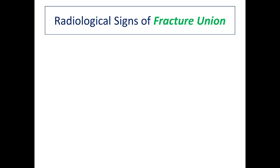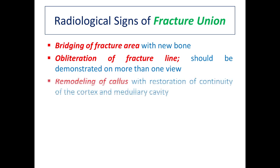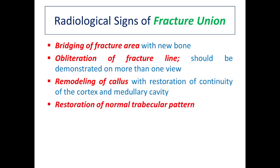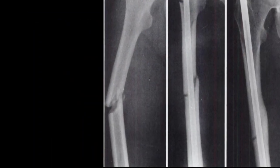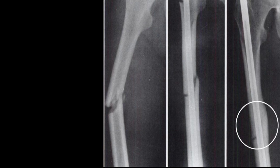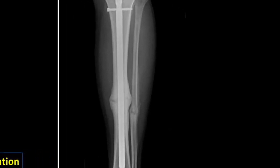The radiological signs of fracture union include bridging of the fractured area with calcification and obliteration of the fracture line. At 8 to 12 weeks, you can observe remodeling of the callus with restoration of continuity of the cortex, medullary cavity, and normal trabecular pattern. Here in this radiograph you can see a mid-shaft femur fracture with intramedullary pinning, showing callus formation and remodeling. Another radiograph shows callus formation in a mid-shaft tibial fracture of transverse type.